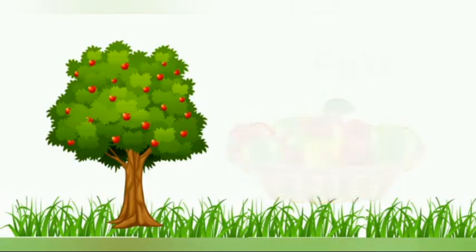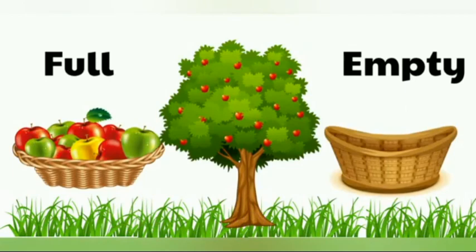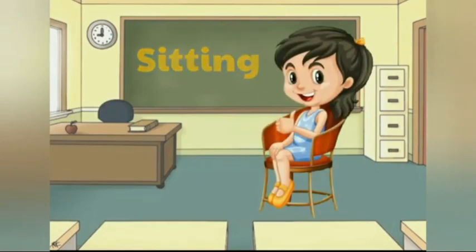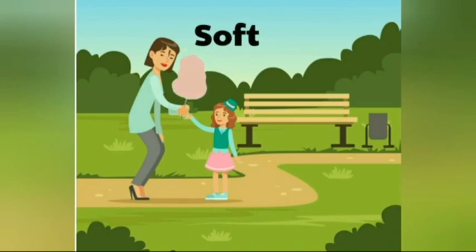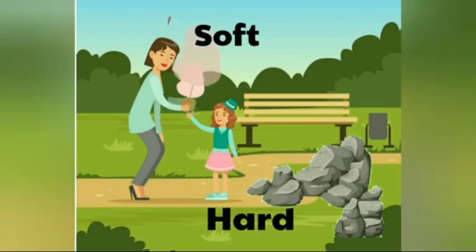Full and empty — this basket is full of apples and this basket is empty. Standing and sitting. Soft and hard — soft cotton candy, hard rock.